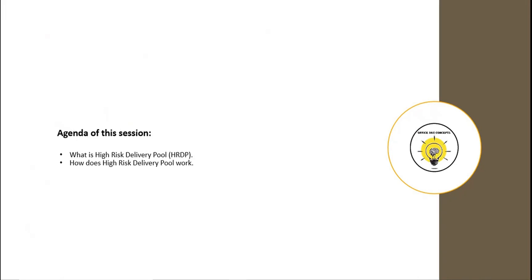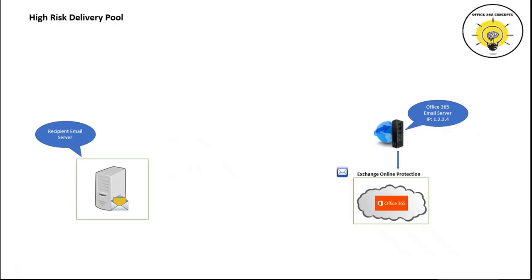In this particular session I will be discussing what is High Risk Delivery Pool and how does it work. If a user from an Office 365 tenant sends an email, that email will be processed by one of Exchange Online Protection's email servers, and the IP address of the email server will be added as the connecting IP address within the email header. Now let's assume that this email is a spam or bulk email sent from a user's mailbox. When the recipient server receives this email, the spam filter server will scan it, this email will be marked as spam, and the SCL value will be stamped as five or higher.